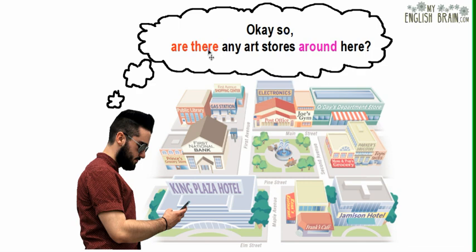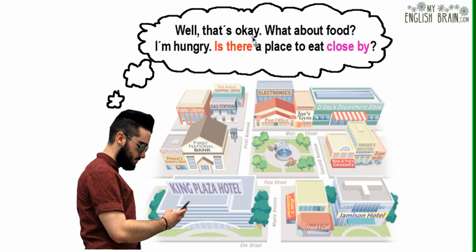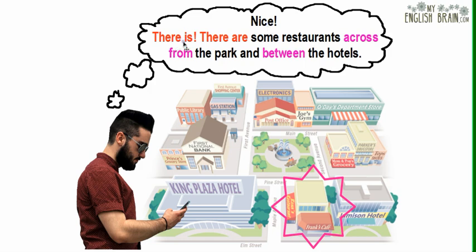Okay, so are there any art stores around here? Hmm, no there aren't. There aren't any close to here. Well, that's okay. What about food — I'm hungry. Is there a place to eat close by? Nice — there are some restaurants across from the park and between the hotels.